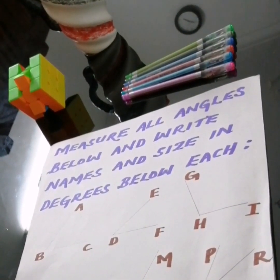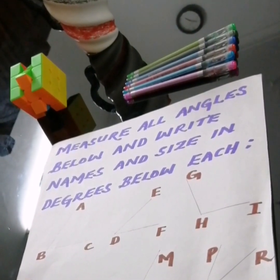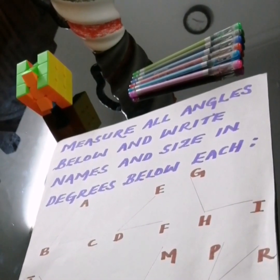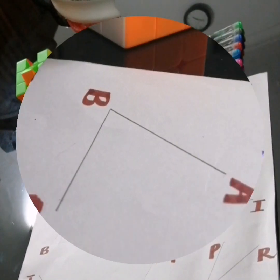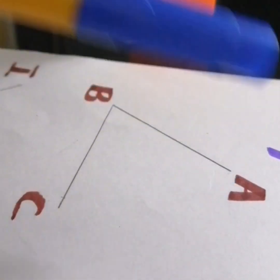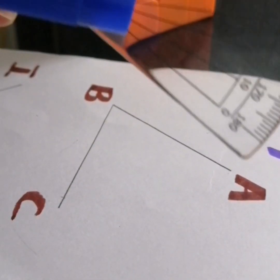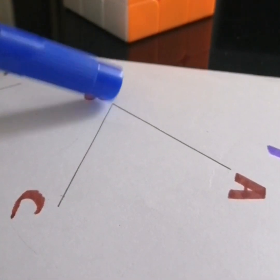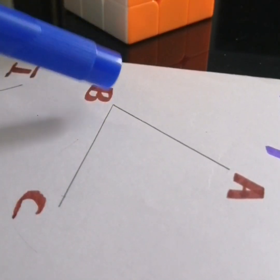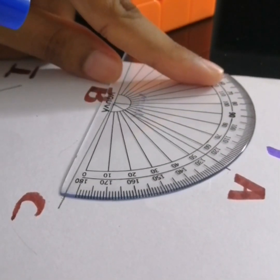Here is the first question: measure all angles below and write their names and sizes in degrees. We need to measure angle ABC. Place the center of the protractor at the joining point of AB and BC. The joining point is B, so place the protractor at point B.